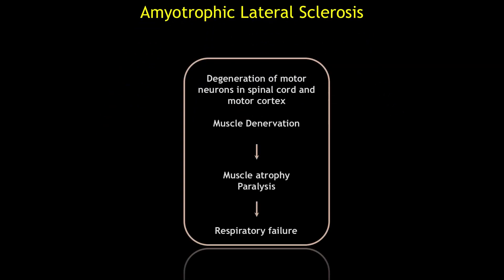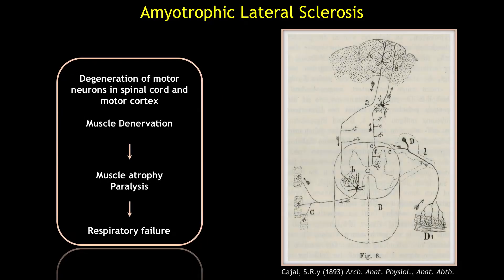ALS, also known as motor neurone disease or Lou Gehrig's disease in the US, is primarily characterised by the progressive loss of motor function, which ultimately results in paralysis. The cause of this paralysis is the degeneration of a class of neurons called motor neurones, which were nicely illustrated back in the 19th century.